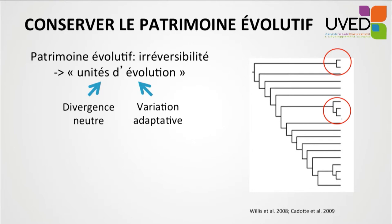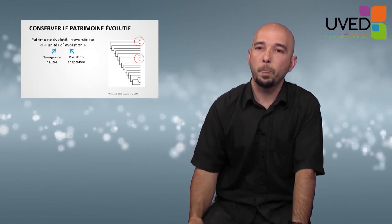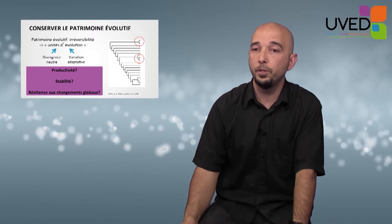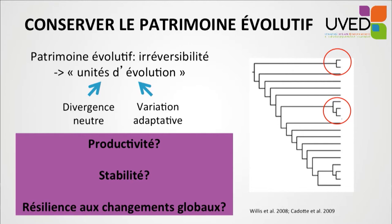We use neutral divergence — the time since which various groups have diverged — assuming that those that diverged more recently will be less genetically redundant and their loss less irreversible. We can also use adaptive variation and ecological functions that we wish to conserve. We know today that phylogenetic diversity largely determines productivity, stability of biological systems, and their resilience to environmental changes.